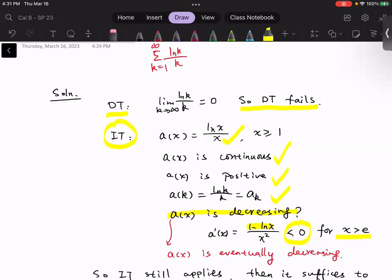Okay, so we do not have the global decreasing. However, it is eventually decreasing. Indeed, this is the essential thing that we would need for the integral test. Roughly speaking, we only care about the asymptotic behavior. So eventually decreasing should be sufficient.